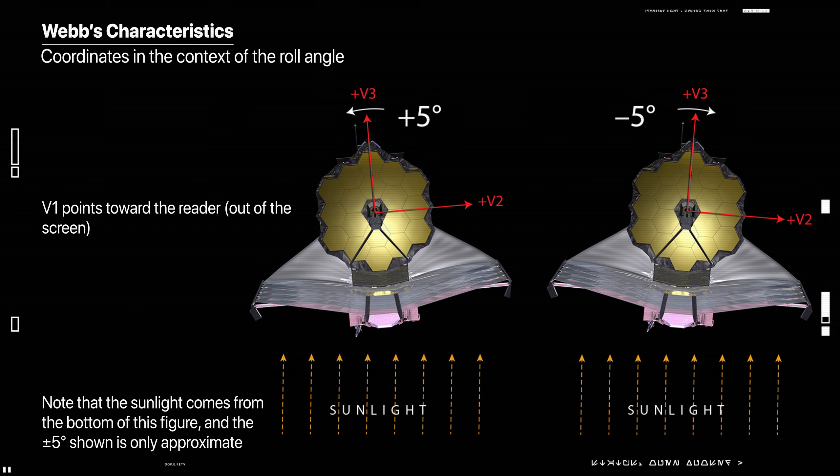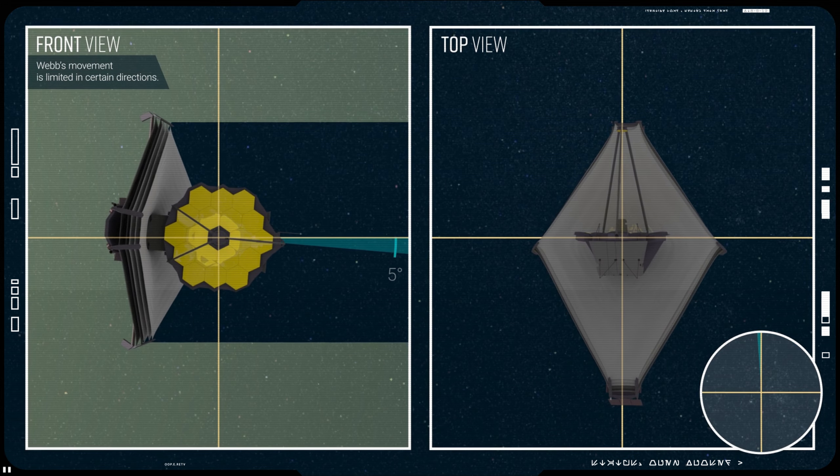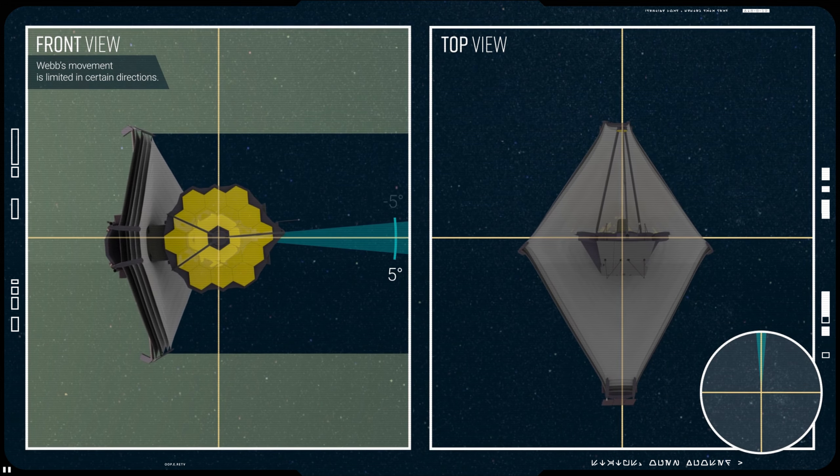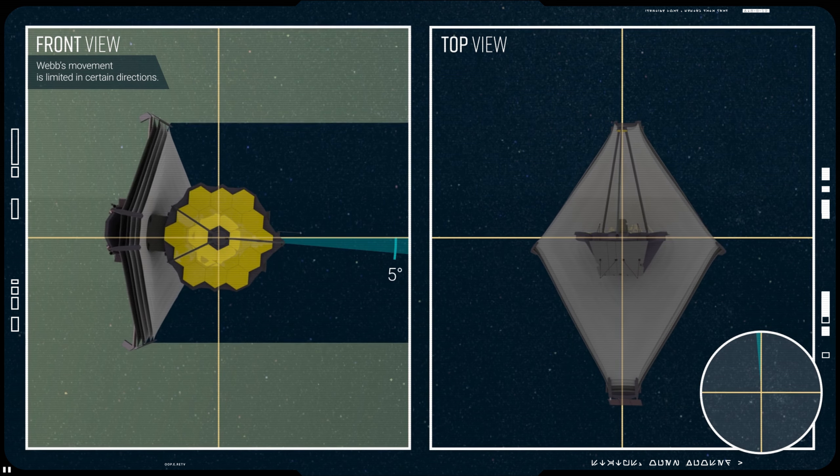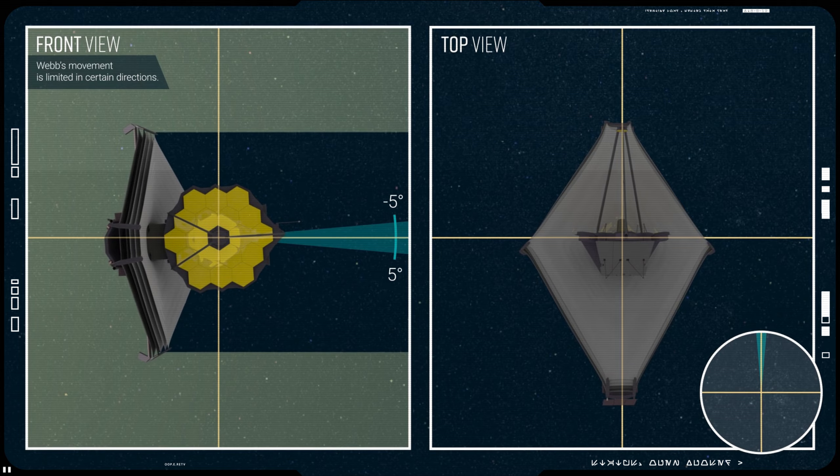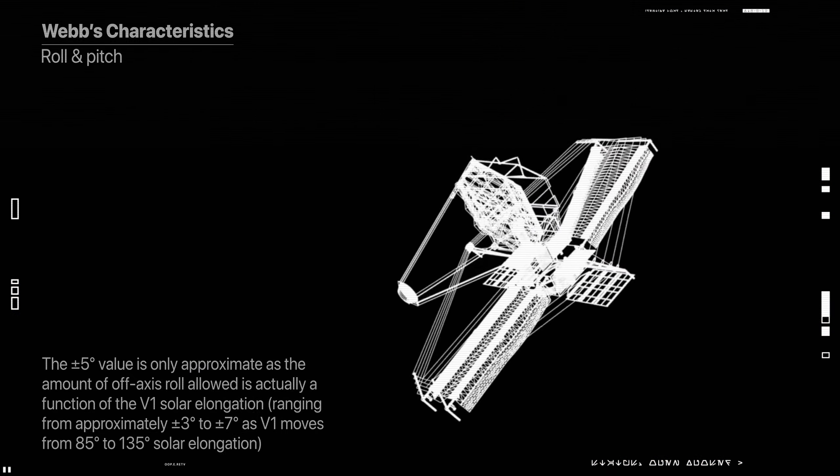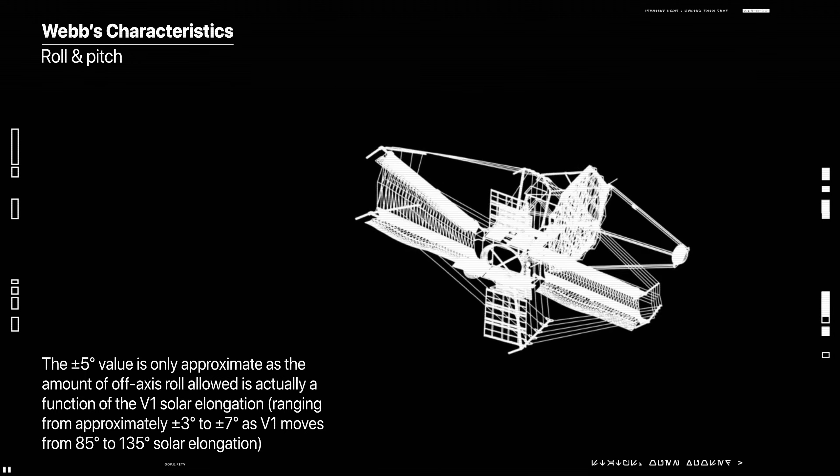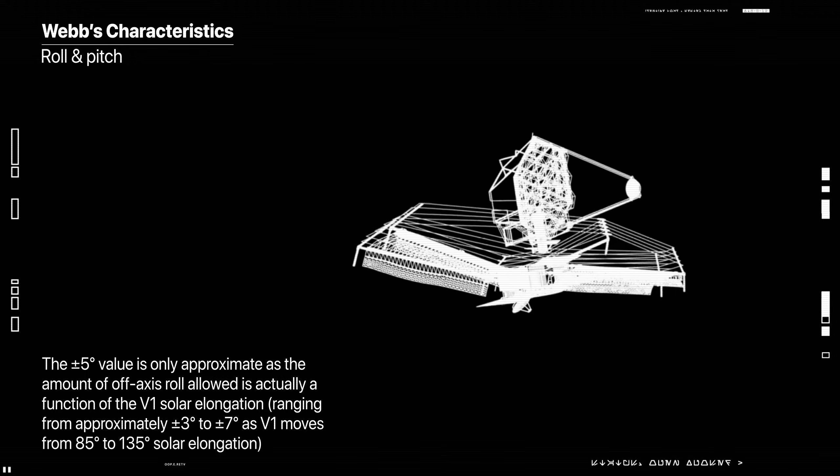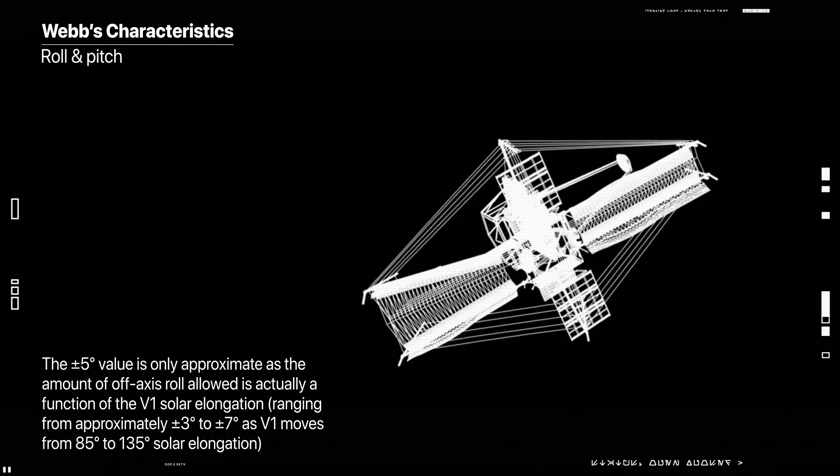The plus or minus 5 degrees value is only approximate, as the amount of off-axis roll allowed is actually a function of the V1 solar elongation, ranging from approximately plus or minus 3 degrees to plus or minus 7 degrees, as V1 moves from 85 degrees to 135 degrees solar elongation.